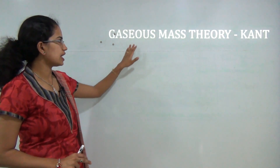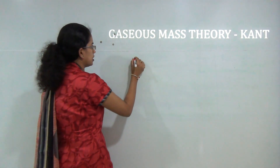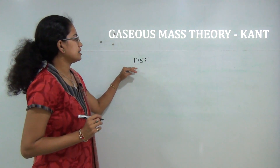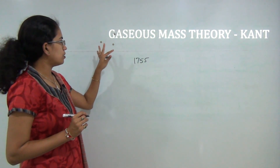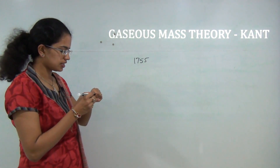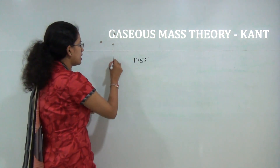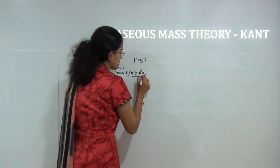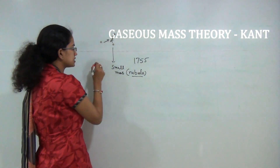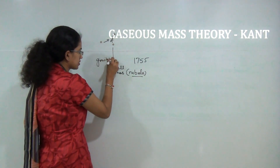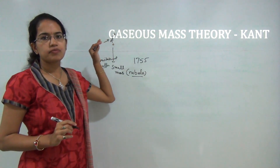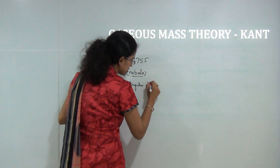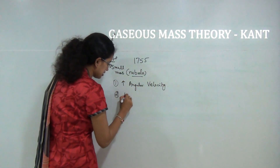Let's start with the first theory — the gaseous mass theory given by Kant. This is one of the most ancient theories, propounded in 1755 by Immanuel Kant. The basic idea behind this theory, which we will demonstrate using magnets, was that there are small masses present known as nebulae. Over time there is a gravitational pull that acts between the nebulae, leading to two things: an increase in angular velocity and an increase in temperature.